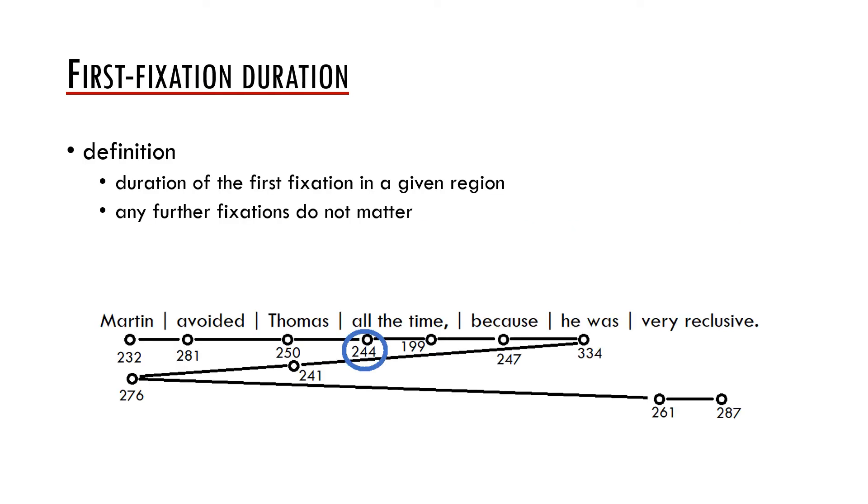A very frequent measure is the first fixation duration. This is the duration of the first fixation of a word or in a given region. Any further fixation does not matter. In the case of the example sentence, the first fixation duration in the region all the time is 244 milliseconds. Similarly, the first fixation duration in the region Thomas is 250 milliseconds. This measure is important because it captures the difficulty of the initial processing of the word or region.